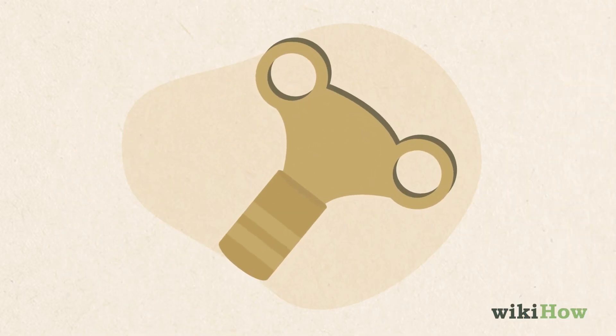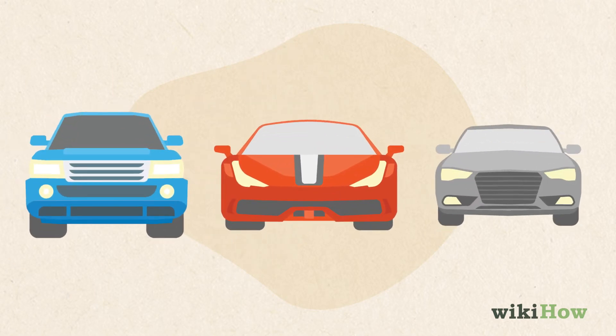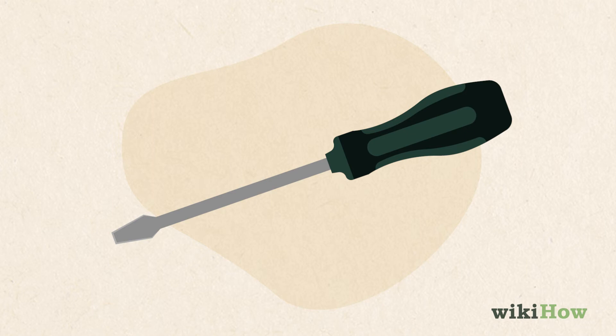To bleed your radiator, you'll need to get a radiator key from your local hardware store. Depending on the model of your vehicle, you may also be able to use a flathead screwdriver. So check your owner's manual.